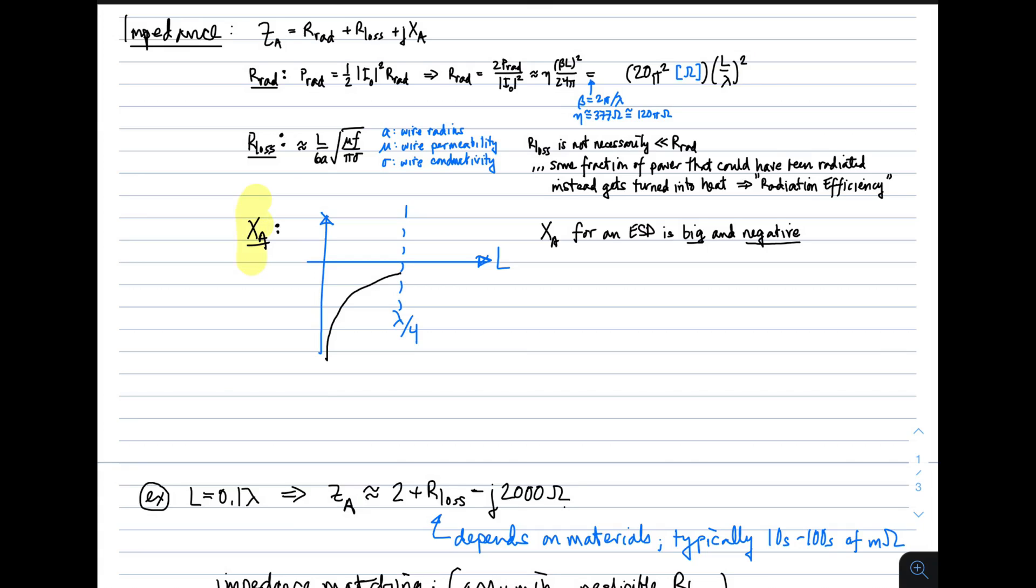And then the reactants, X sub A, that's a little bit difficult to analyze at the level of detail we're going to do it here. I will simply show you what it looks like, and it looks like this. The vertical axis is reactants. It can be positive or negative, of course. The length of the antenna is the horizontal axis.